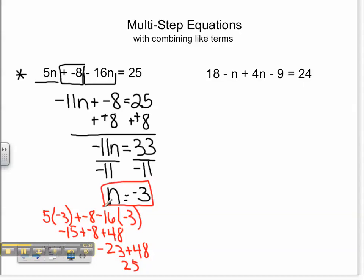Let's look at our next problem. Combining like terms, we have negative n, which is negative 1n, plus 4n. That gives us 3n. Our other two terms left are 18 minus 9 for a positive 9. That is then equal to 24. So our simplified equation is 3n plus 9 equals 24.